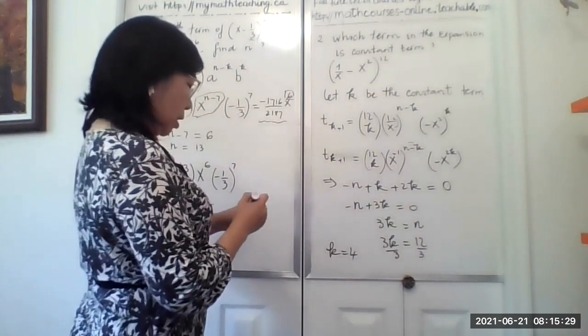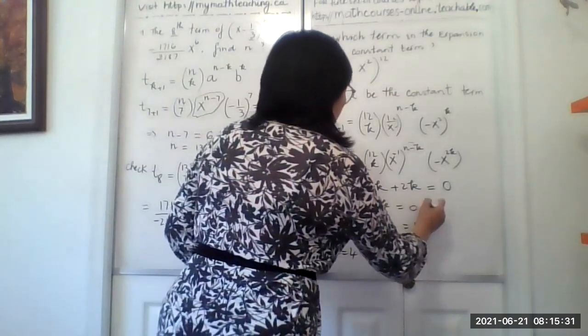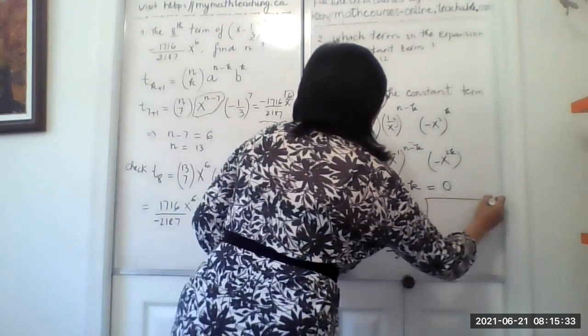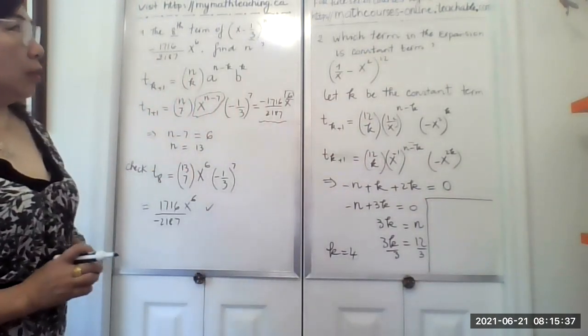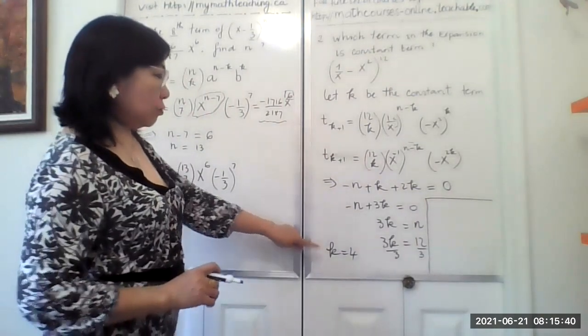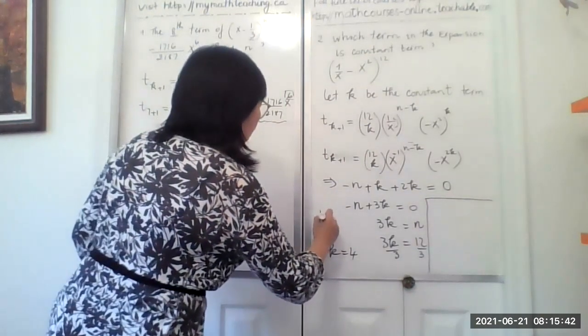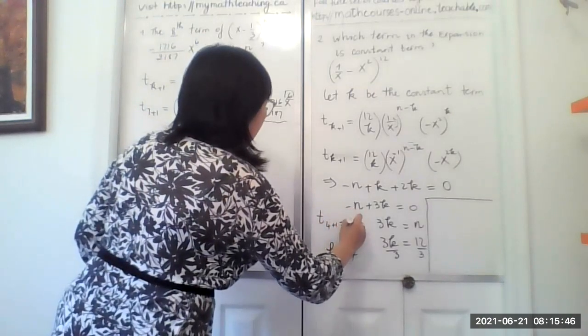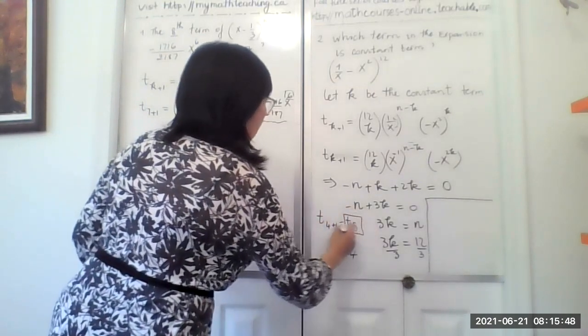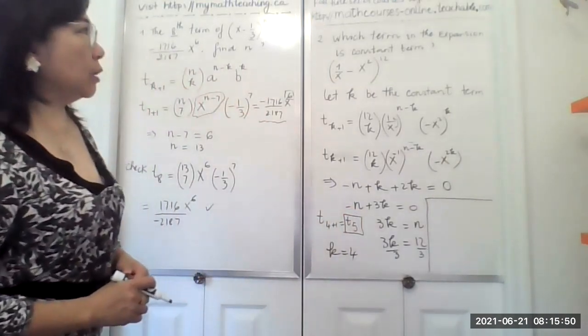So now we know k equals 4. But if we know k equals 4, so the answer of the t will be t 4 plus 1, which is t sub 5. So the constant term is the term 5. That's our answer.